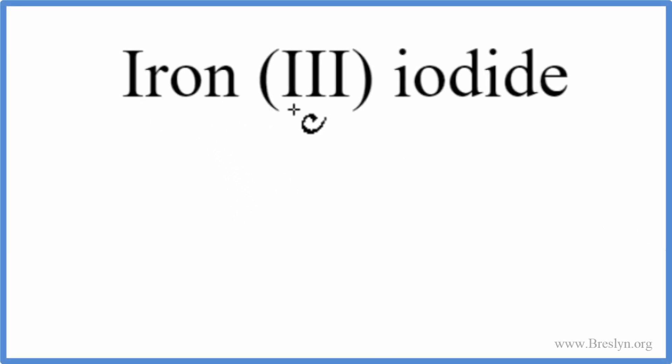To write the formula for iron 3 iodide, we'll look up iron on the periodic table. It has an element symbol of Fe. And then iodide, we're looking for the iodine atom. That symbol is I.